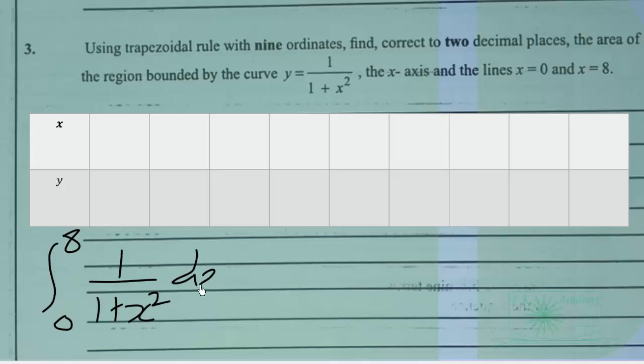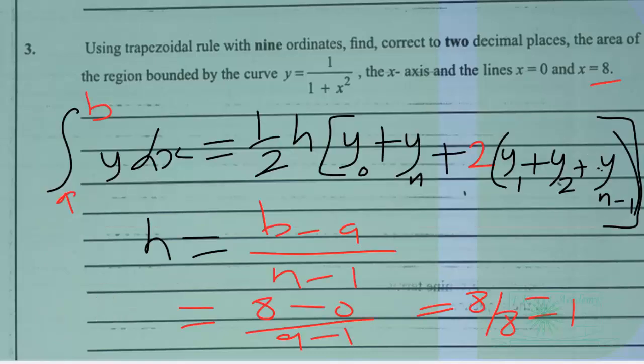Let us look at the x values. We start from x equals 0, so we put 0 here, and then we keep adding the h that we found here.